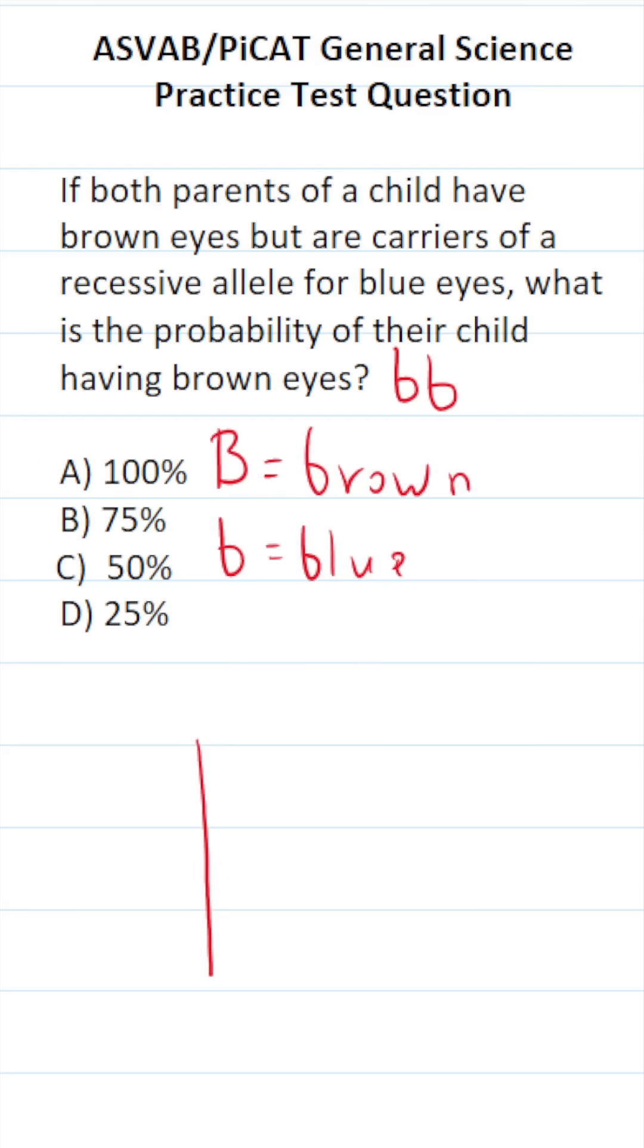We're going to use a Punnett square to quickly figure this one out. Again, according to the problem, both parents have brown eyes but are carriers of the recessive allele for blue eyes. So their genotype, in other words, looks like this.